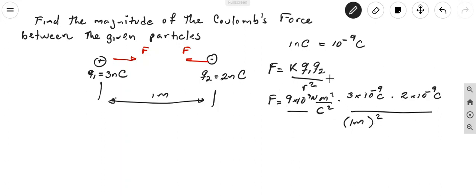So first, let me tell you that if we multiply 10 to the negative 9 with 10 to the 9, this would be 10 to the 0. So we eliminate this 10 to the 9 with the 10 to the negative 9.